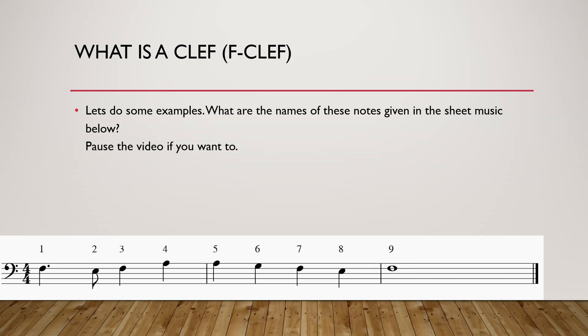So let's do another example. Can you name the notes given in the sheet music below? If you think you already got this, you can pause the video and try it for yourself first. So let's see — always check what clef we are in. The clef is F clef, so between these two dots is an F. The first note already is an F. The second note is one step below F, which is an E. The third note is on the fourth line again, which is F. The fourth note is two steps above — F, G, A — so an A. The fifth note is also an A. The sixth note is a G. An F, E, E, and it ends with an F. And here are the answers given.